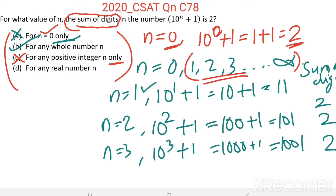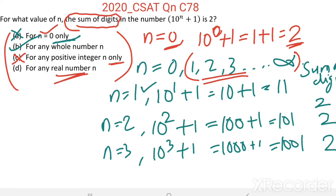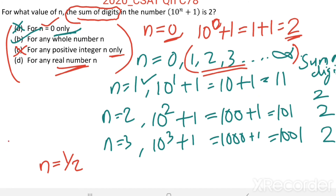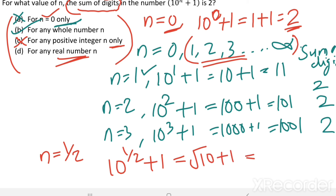The fourth option says for any real number n. Real numbers include all integers, whole numbers, rational numbers, fractions, everything. Take a fractional value: n equals 1/2. Then 10 power 1/2 plus 1 equals root 10 plus 1. Root 10 is approximately 3 point something, plus 1 gives 4 point something, and the sum of digits is not equal to 2. Therefore, for any real number n, this is false.